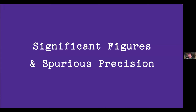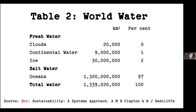Significant figures and spurious precision — spurious precision was mentioned earlier today as well. Many years ago, about 30 years ago, I wrote a book with a friend, Tony Clayton, on sustainability. We had this crazy notion that the planet was in trouble.